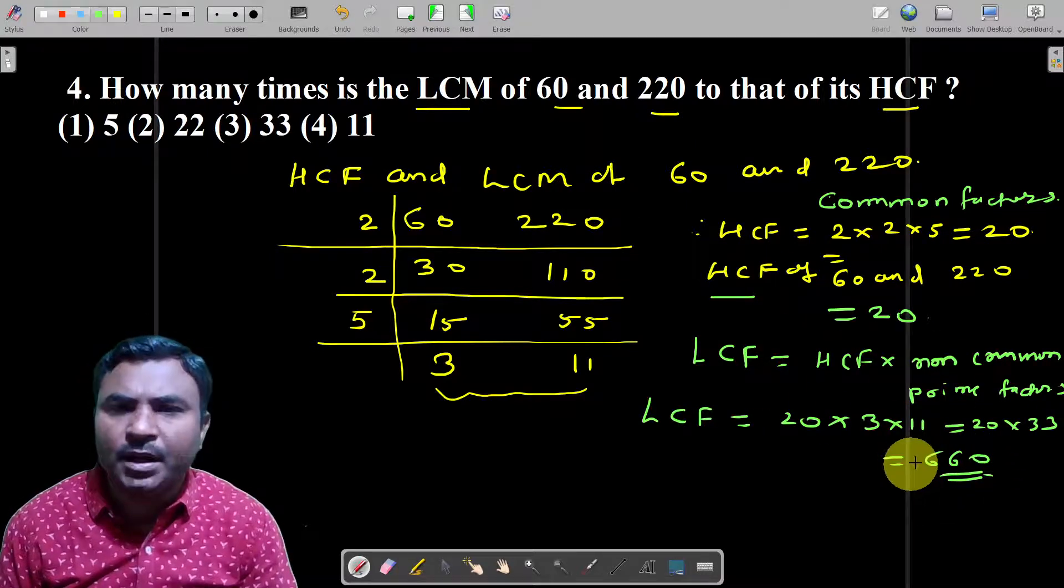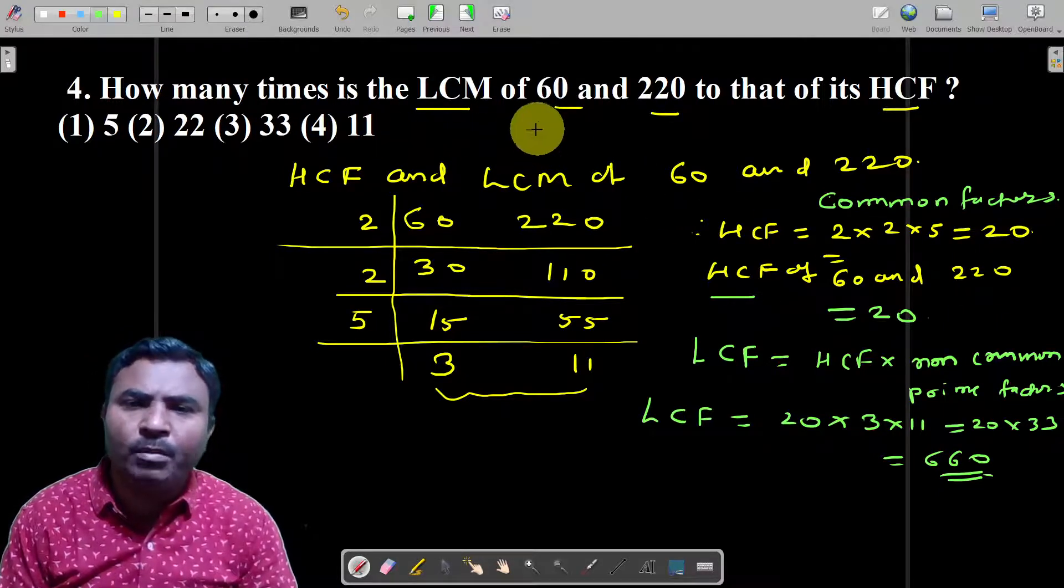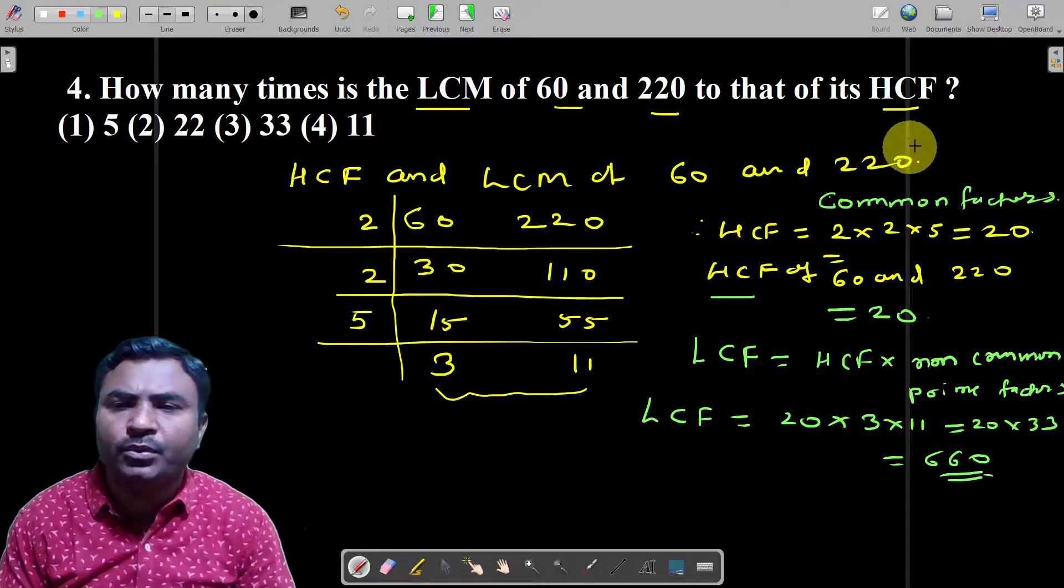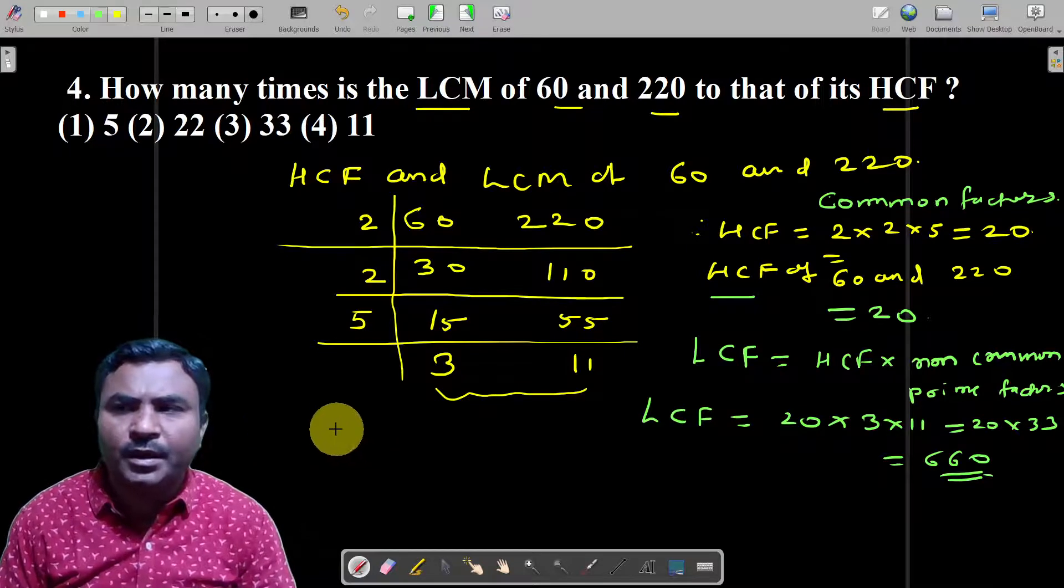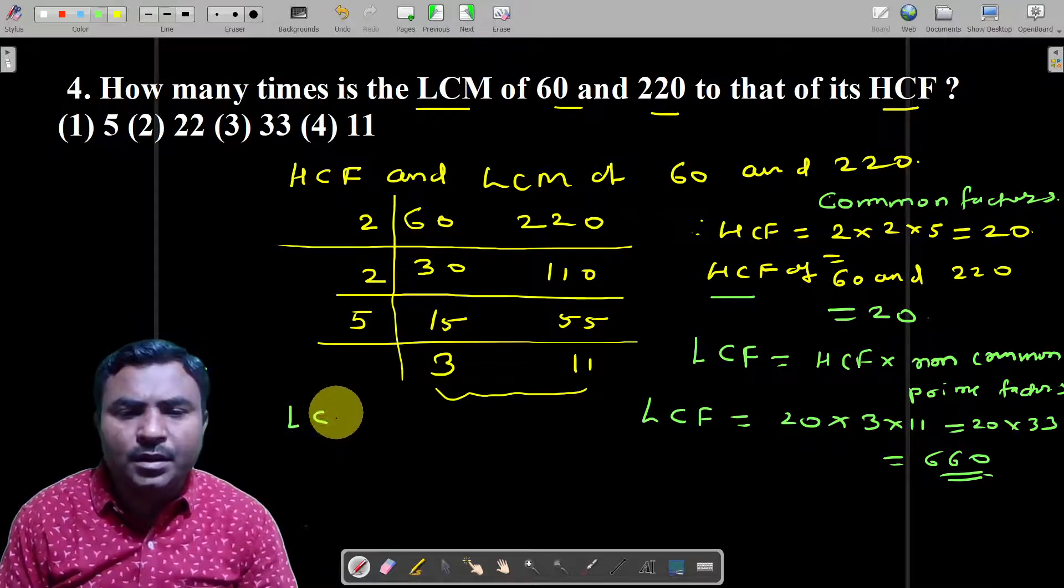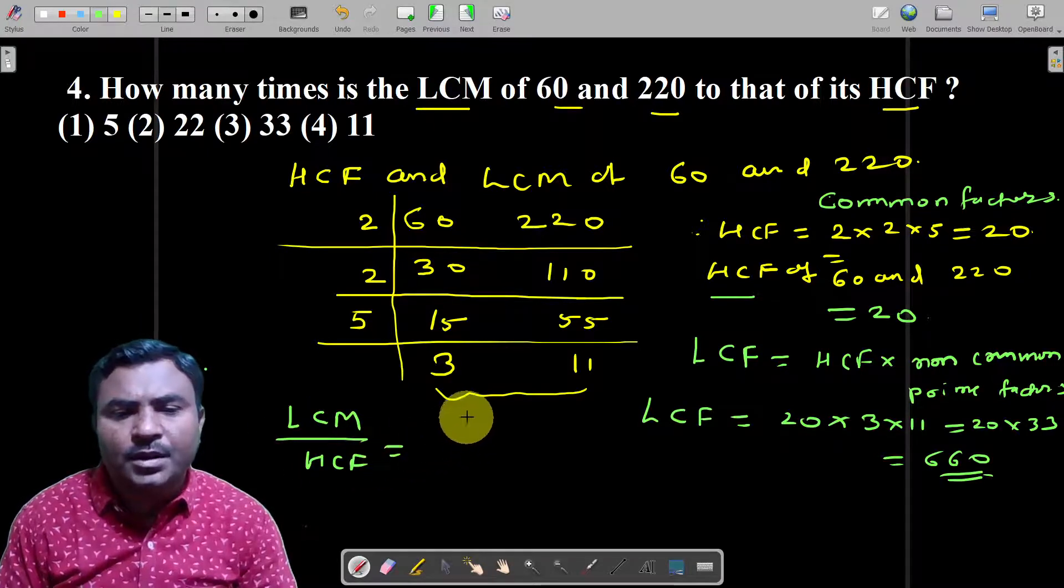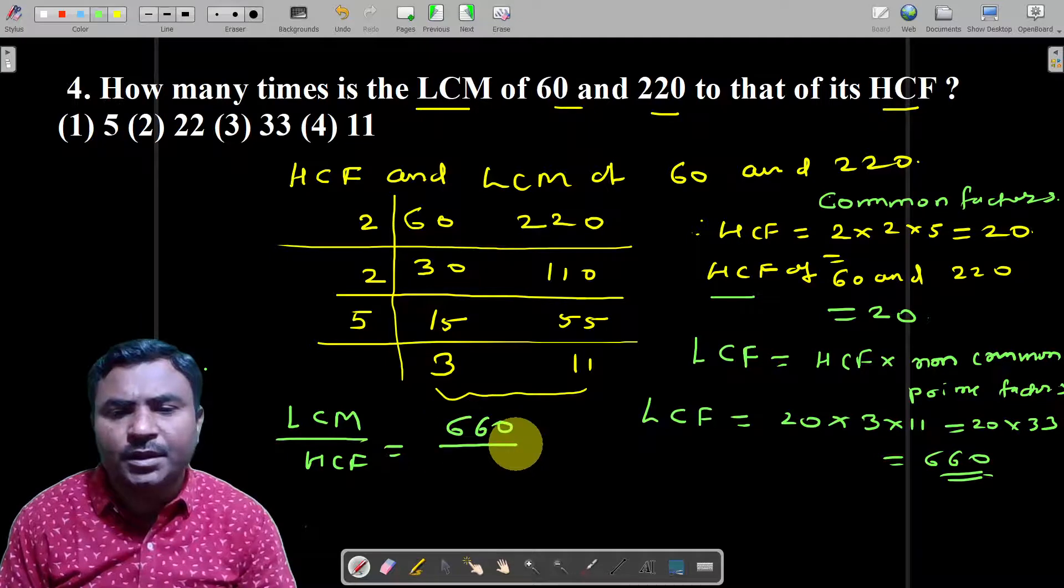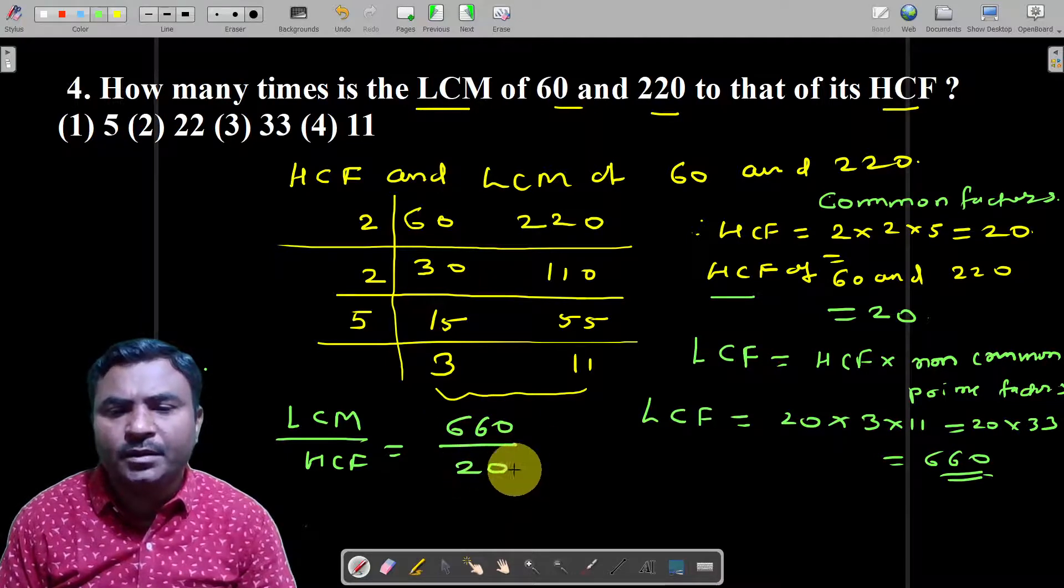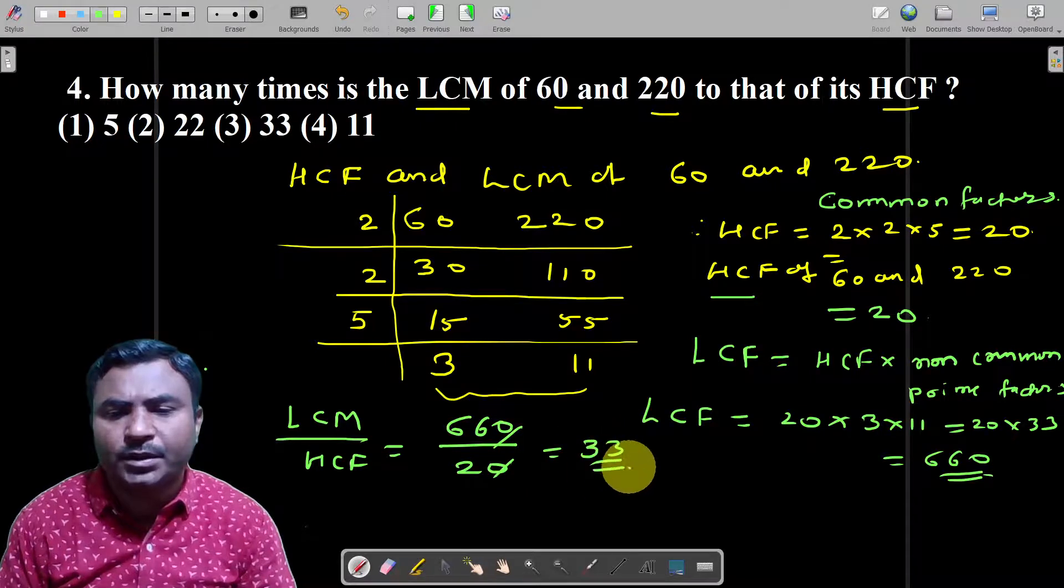Now let's compare how many times LCM is to HCF. LCM divided by HCF. LCM is 660 and HCF is 20. 0 gets cancelled and we divide to get 33.